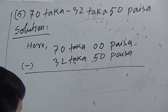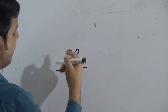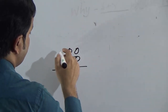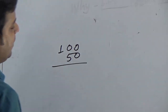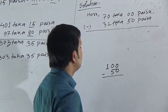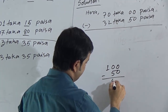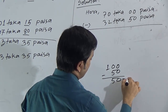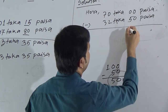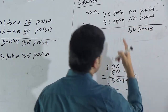Subtract paisa from paisa: is it possible to subtract 50 paisa from 00 paisa? No, 50 is greater than 0. So we have to take 1 taka as loan. 1 taka means 100 paisa. Now subtract 50 paisa from 100 paisa, you will get 50 paisa.